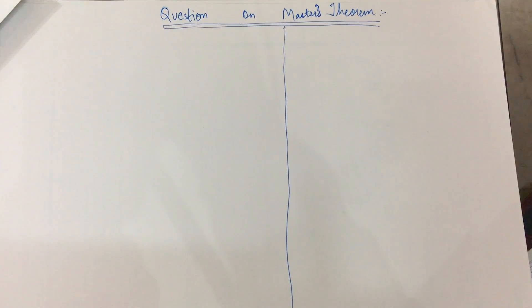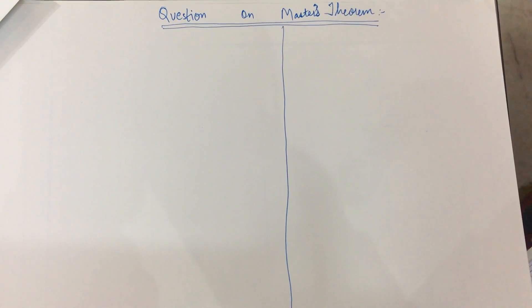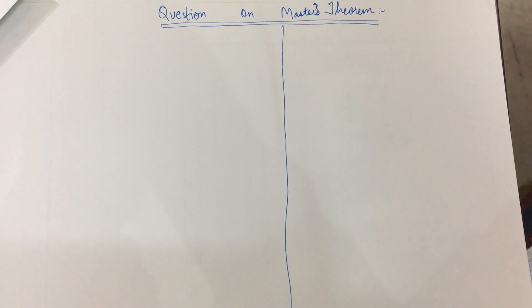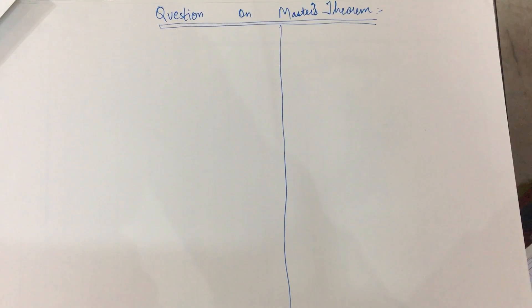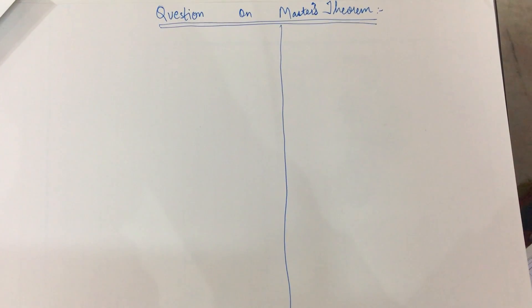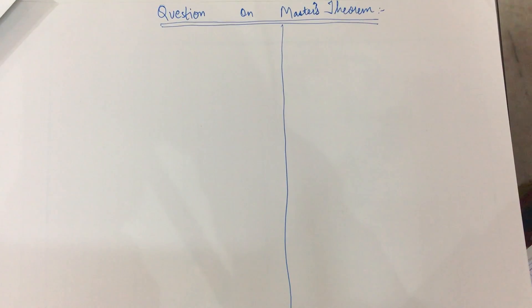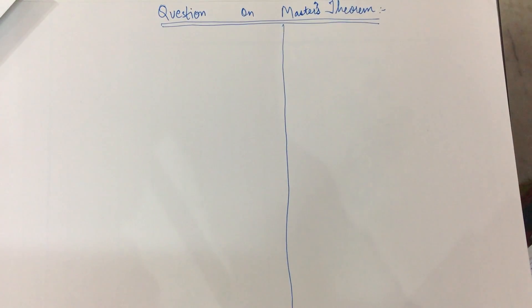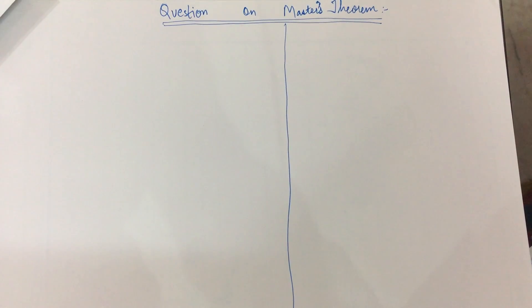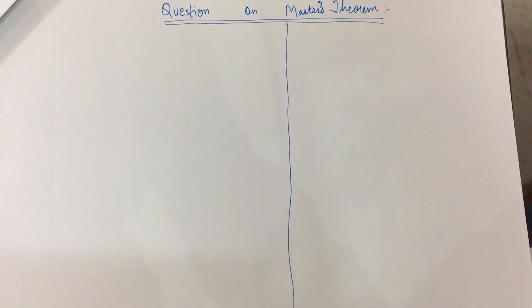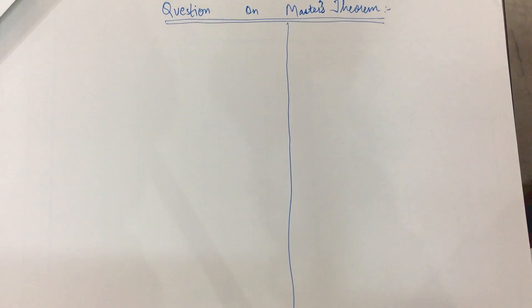Hello everyone. In this video we are going to discuss questions solved using the Master's Theorem. In the previous one we discussed how the complexity is written in the form of the Master's Theorem — the equation and also the three rules. So let us revise those three golden rules.